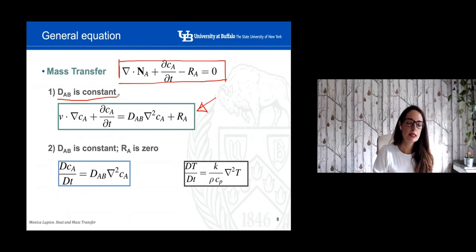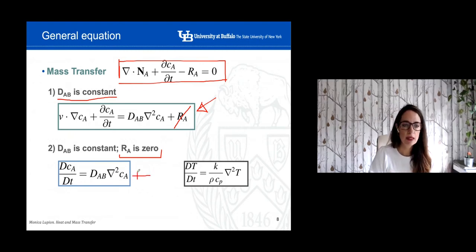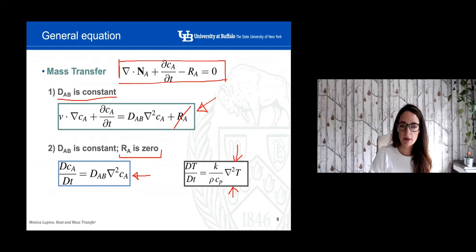Let's go a little further. Let's assume the diffusion coefficient is constant and that there is no chemical production, so the term R_A is equal to zero. We can cancel that term. The result is that the dependence of concentration with time will be equal to the constant diffusion coefficient times the Laplacian of the concentration. If you remember when we studied heat transfer, we also got a very similar equation when we considered no heat generation. In heat transfer the parameter is temperature; in mass transfer the parameter is concentration — you can see the similarities between these two expressions.